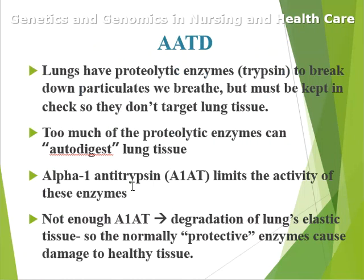Normally the lungs have proteolytic enzymes like trypsin to break down particulates we breathe in. But those enzymes have to be kept in check so they don't start to target self-lung tissue, because too much of the proteolytic enzymes can auto-digest lung tissue. Alpha-1 antitrypsin limits the activity of those proteolytic enzymes. If we don't have enough alpha-1 antitrypsin or if we have too much trypsin, we get degradation of the lung's elastic tissue.